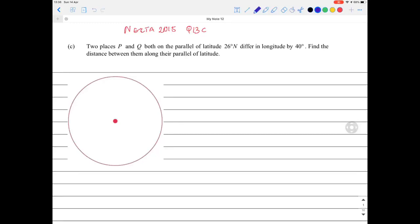Hi there, we have question 13c from NECTA 2015 past paper. This is from a Form 3 topic on Earth as a sphere. We're given two places P and Q both on the parallel of latitude 26 degrees that differ in longitude by 40 degrees. Find the distance between them along the parallel of latitude.